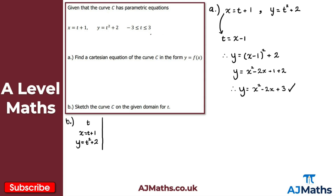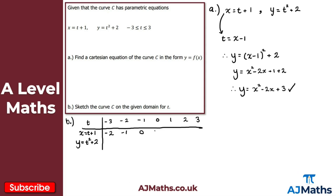Let's write down the values of t: minus 3, minus 2, minus 1, 0, 1, 2, and 3. For x equals t plus 1: when t is minus 3, x equals minus 2; when t is minus 2, x equals minus 1; when t is minus 1, x equals 0 — so x is just increasing by 1 each time, giving minus 2, minus 1, 0, 1, 2, 3, and 4.